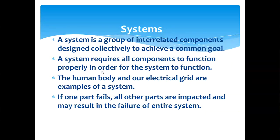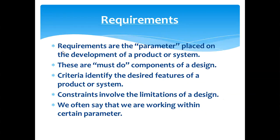There are five core concepts of technology: system, requirements, optimization, trade-off, process, and control. A system is a group of interrelated components designed collectively to achieve a common goal. A system requires all components to function properly. For example, in our body, if we cannot see, something is missing — the body is not functioning properly. The human body and our electrical grid are examples of a system. If one part fails, all other parts are impacted and may result in failure of the entire system. Requirements are the parameters placed on the development of a product or system.